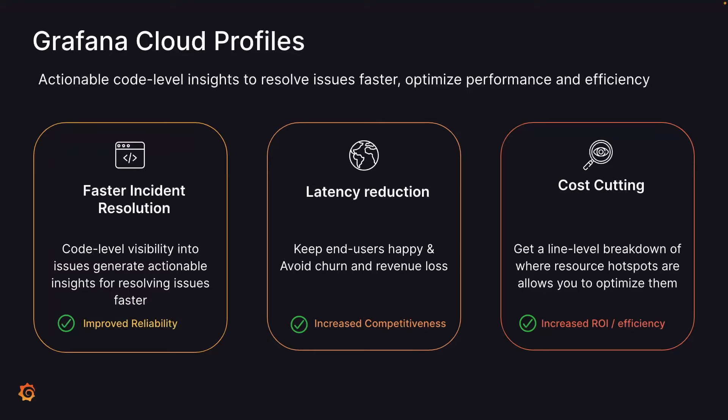That ends up being true in rideshare, ecommerce, banking, and many other places as well. And then finally is cost cutting. Obviously in today's environment a lot of people are very focused on costs and making sure they are getting the proper return on their investments. Being able to get this line-level breakdown of resource utilization allows you to attribute the cost you're spending on CPU or memory or other things to the profiles and the pieces of the code themselves.